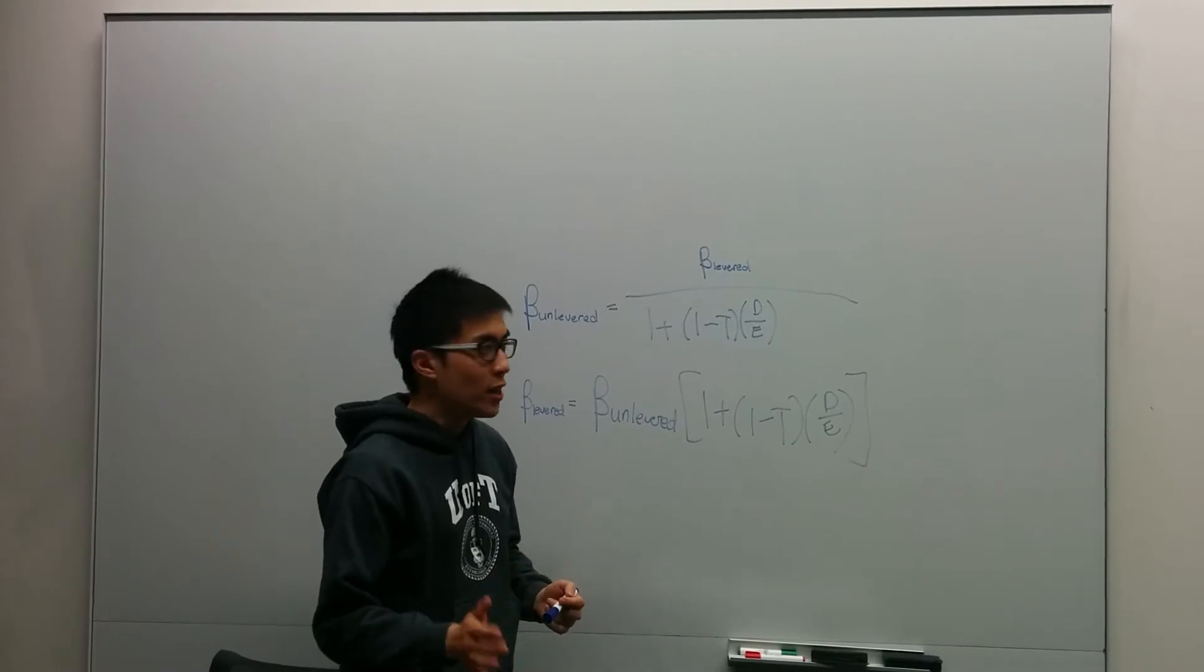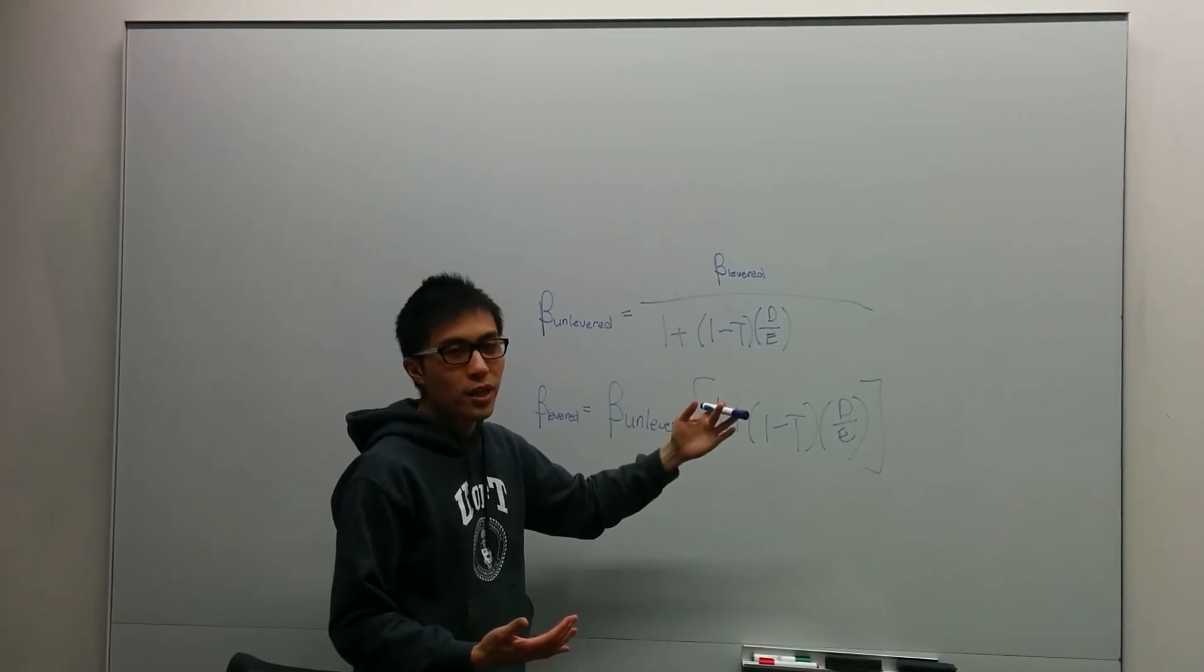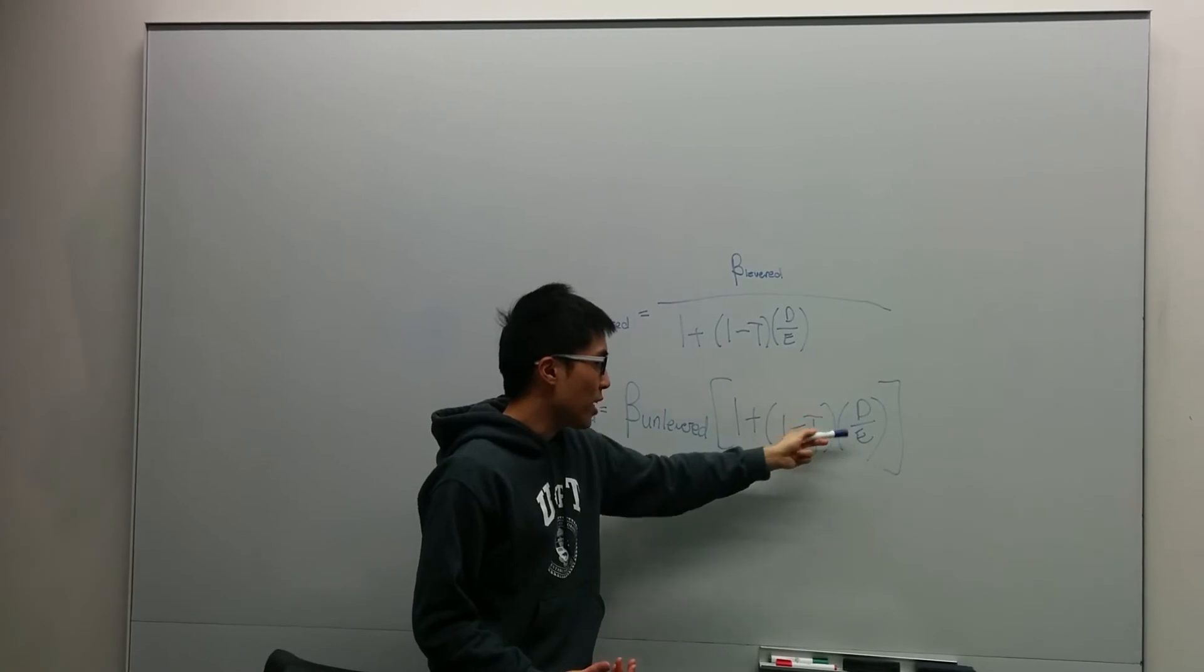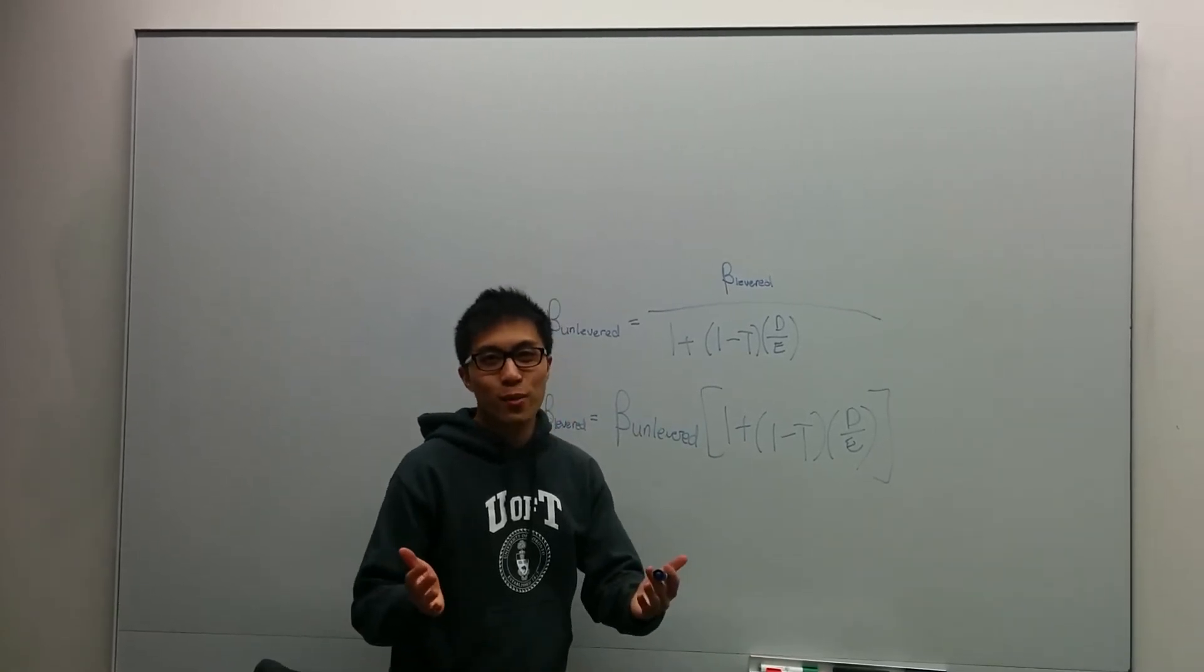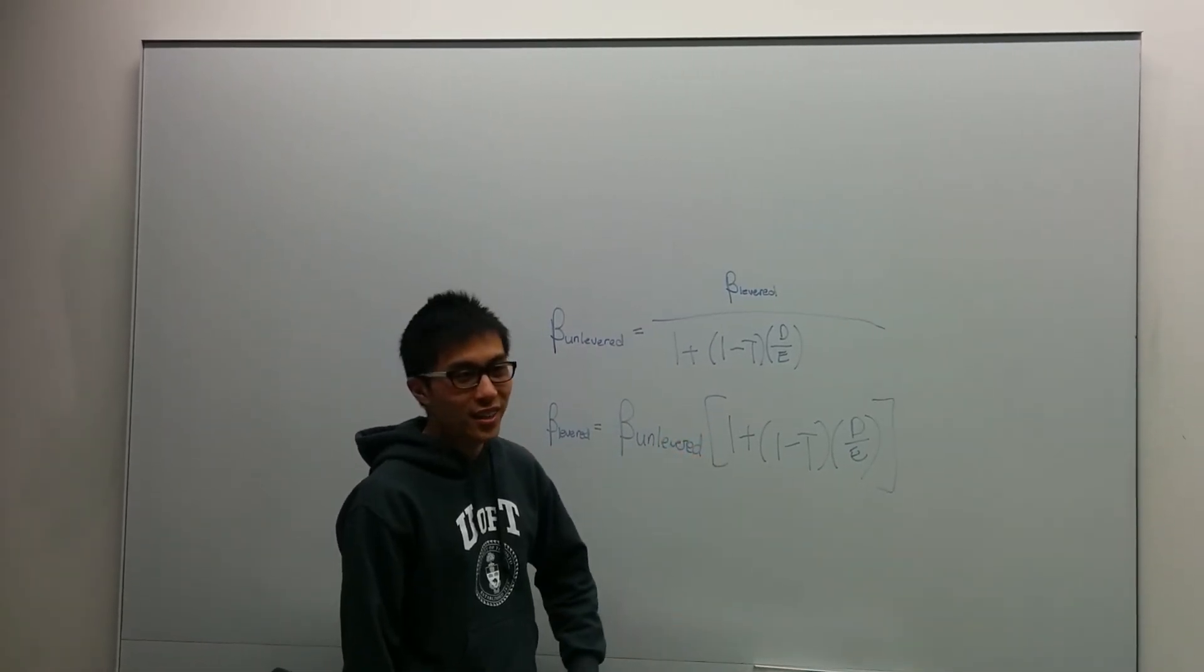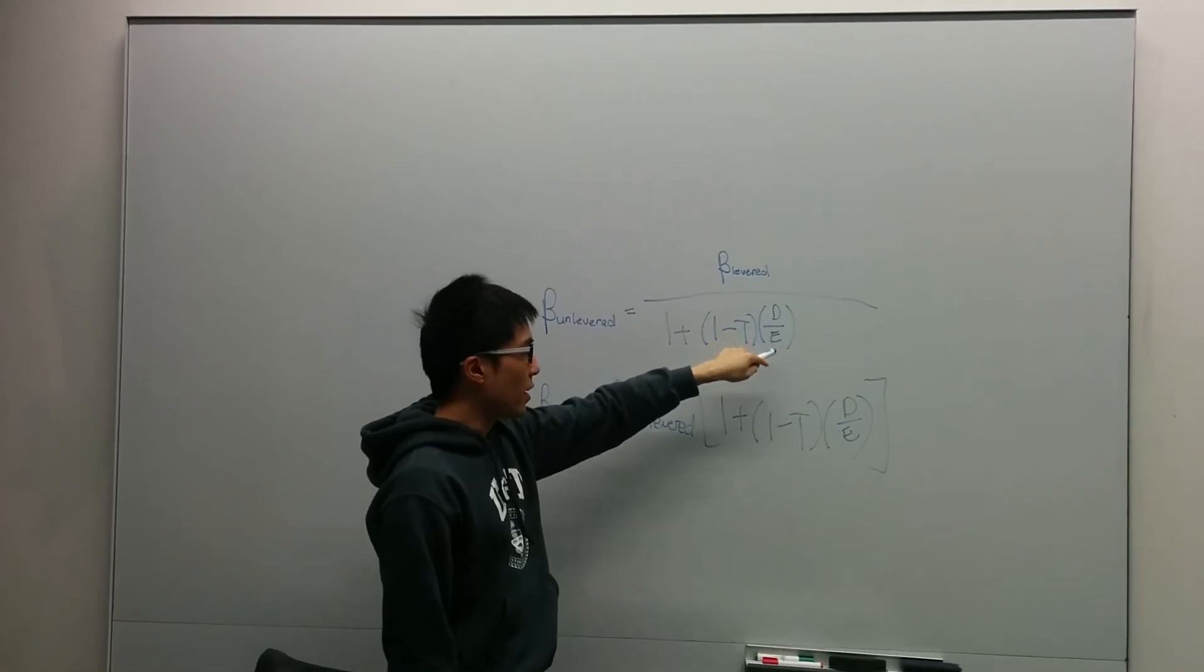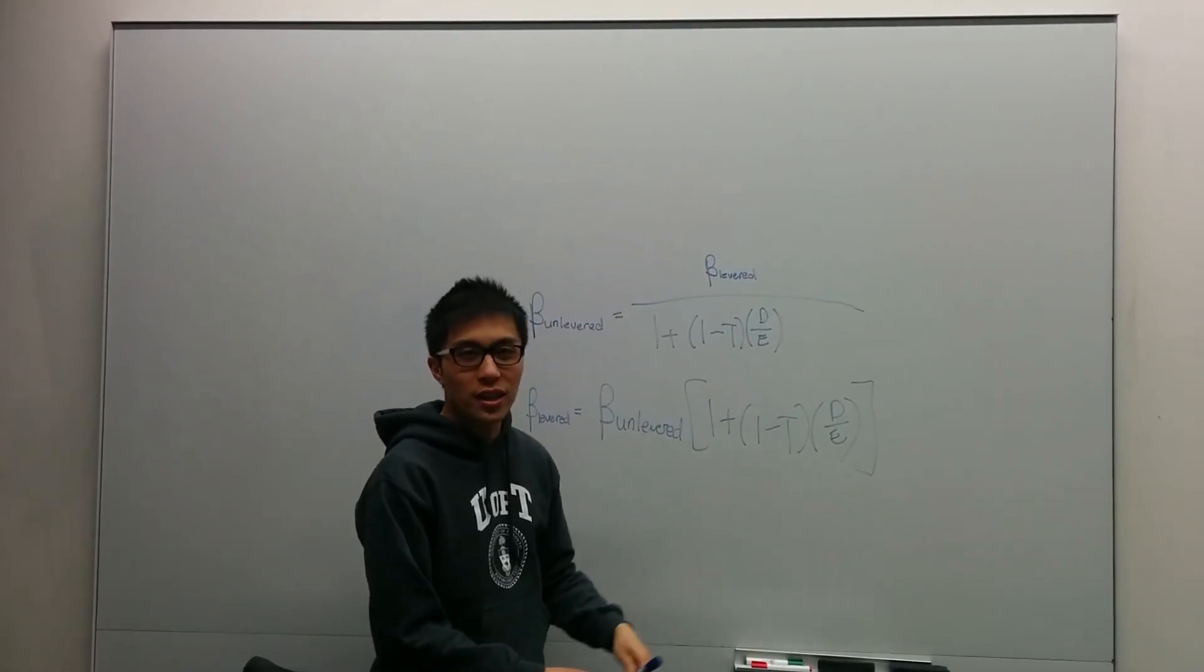One thing to note: when you unlever your beta, the tax rate, debt, and equity are based on the company you're unlevering. So if you have a peer comparable from another company, you're taking their tax rate, debt, and equity. When you relever it, you use your target firm's tax rate, debt, and equity. Say you have a company called Wolverine Chair Manufacturing and other companies called Storm Manufacturing and Phoenix Manufacturing. When you look at Storm Manufacturing, you unlever the beta based on Storm's levered beta and its tax rate, debt, and equity structure. Same thing for Phoenix Manufacturing. Then when you lever it, you lever it back using the Wolverine inputs.